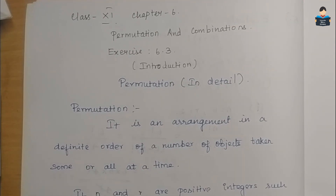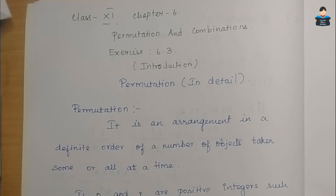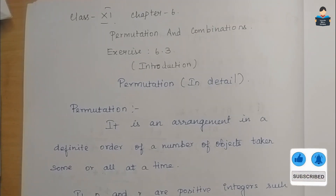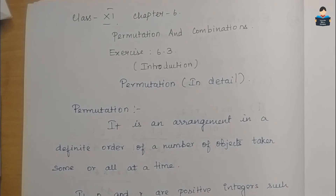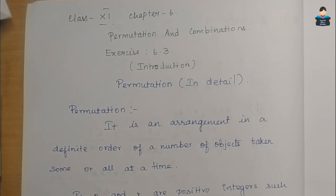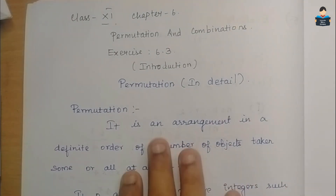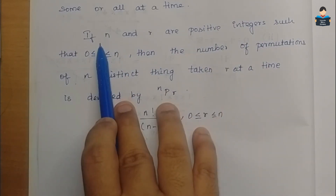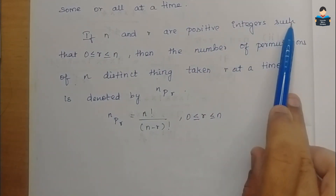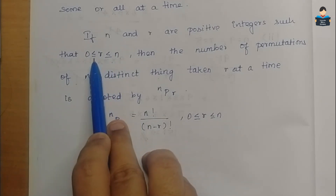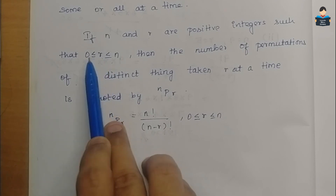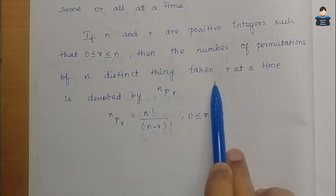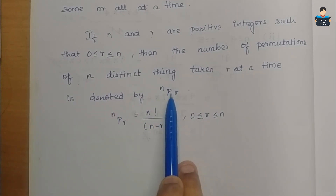Permutation is the arrangement of objects. Objects are arranged in a definite order. In some cases we will get all objects, and in some cases one particular number of objects are made to find out and the arrangement is made. This is called permutation. Now, n and r are positive integers such that r is less than or equal to n and greater than or equal to 0. The number of permutations of n distinct things taken r at a time is denoted by nPr.